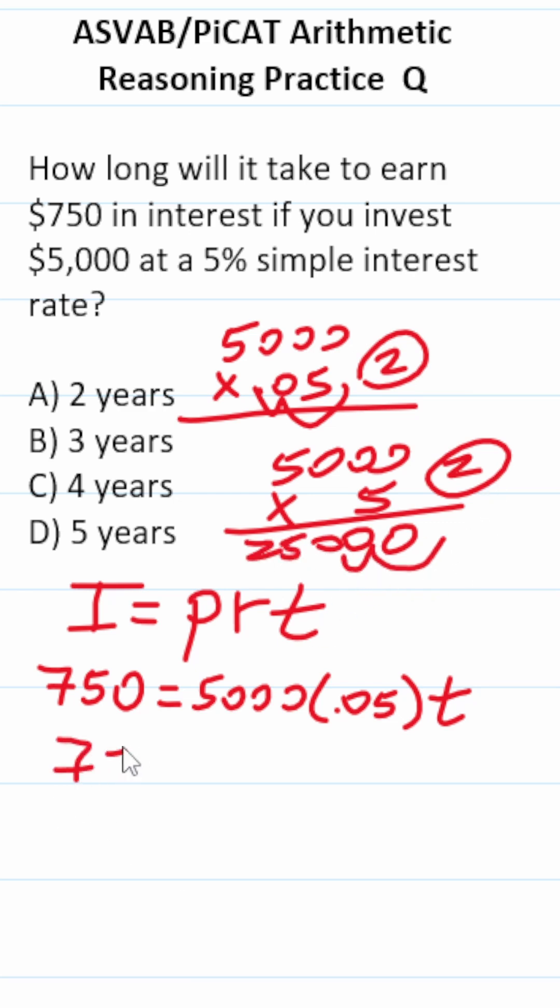This becomes 750 equals 250t. Divide both sides by 250 to get our answer.